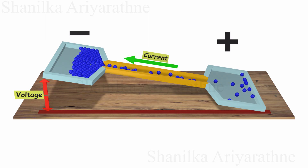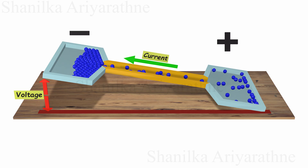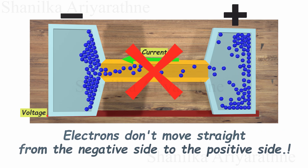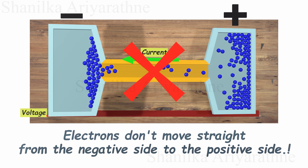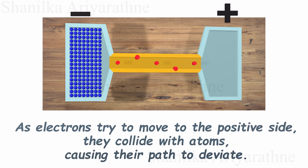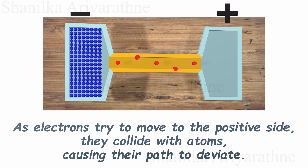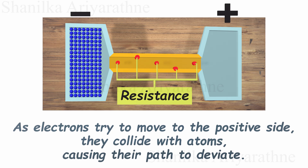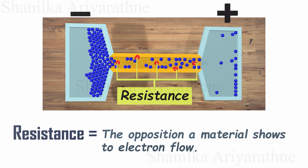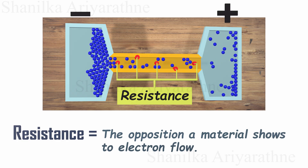Now we know two things about electronics: voltage and current. There is one more important factor to consider: resistance. Even though conductive materials allow electrons to move through them, it doesn't mean that electrons go straight from the negative side to the positive side. There are trillions of atoms between the two ends of a conductor. As electrons try to move to the positive side, they collide with these atoms, causing their path to deviate. So, resistance is the opposition a material shows to electron flow, caused by collisions of electrons with obstacles.